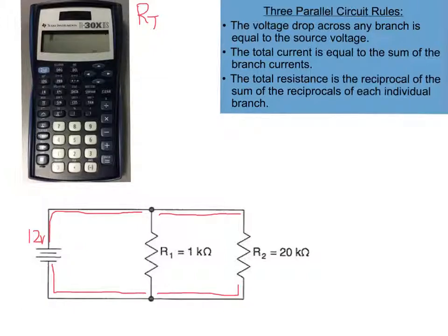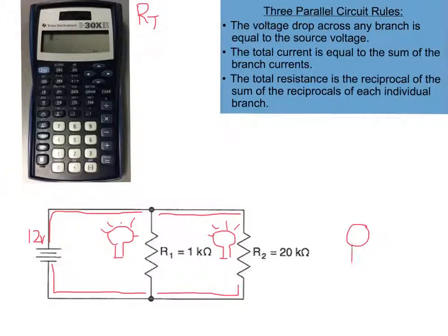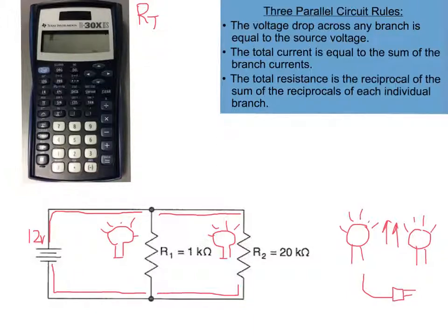The second rule is that the total current is equal to the sum of the branch currents. If we think of these resistors as simple light bulbs — there's a light bulb, there's a second light bulb — every time we turn a light bulb on we have some current. If we add another light bulb, our current goes up. Every time somebody plugs something in or turns something on, we get an increase in current. So the total current is equal to the sum of all the branch currents.